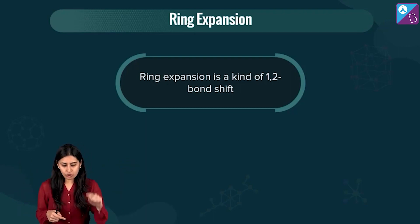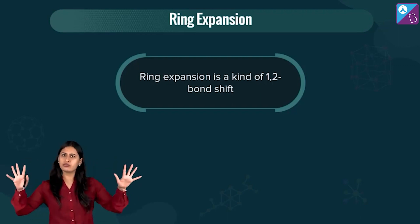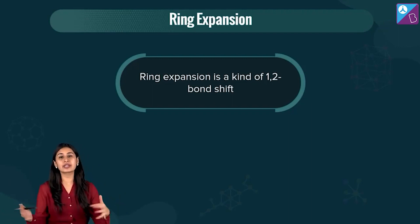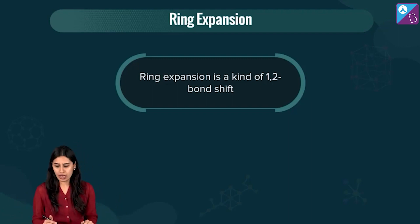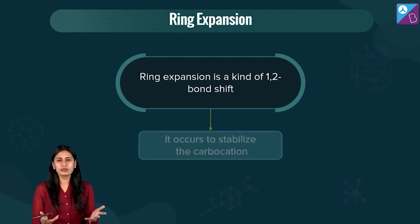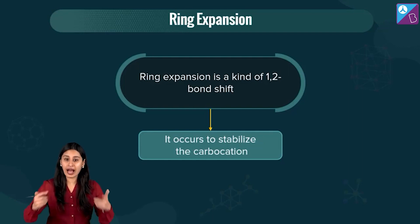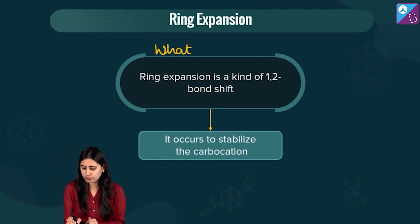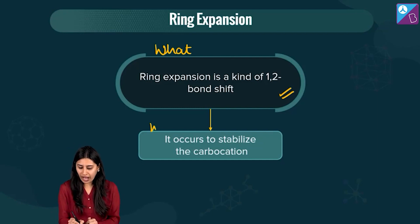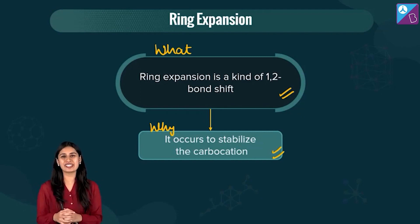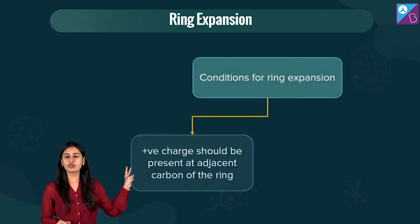Ring expansion is a shift where the number of carbons in the ring increases. It occurs to overcome ring strain and attain more stability. Now, where will you see ring expansion happening? There are two important conditions to keep in mind.